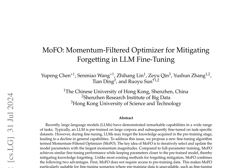The authors propose MOFO, a novel momentum-filtered optimizer designed to mitigate forgetting in large language model fine-tuning. Forgetting occurs when a model's performance on its pre-training task degrades after being fine-tuned on a downstream task. This phenomenon is particularly problematic in LLMs, where the pre-training task is often crucial for the model's overall performance.